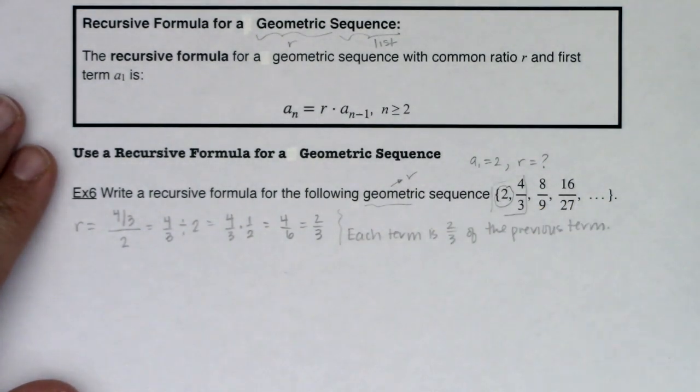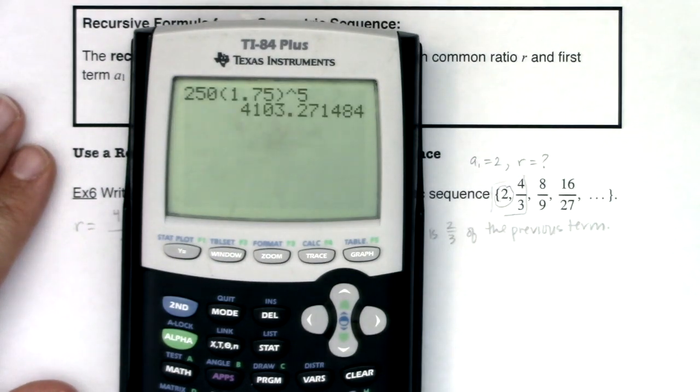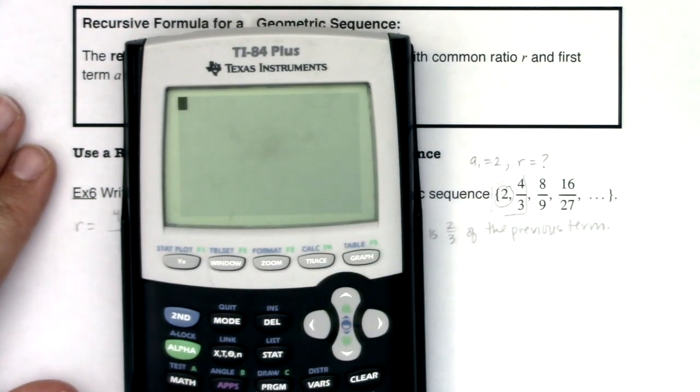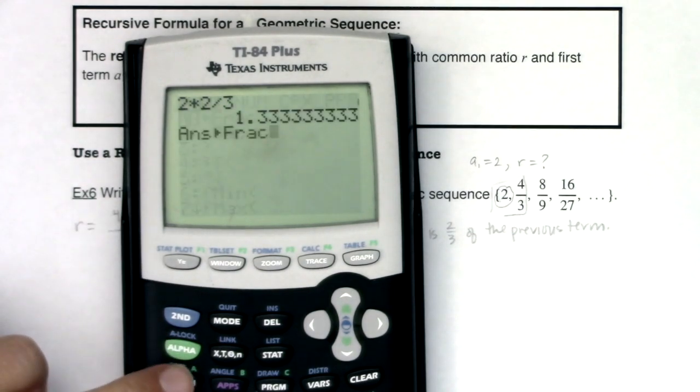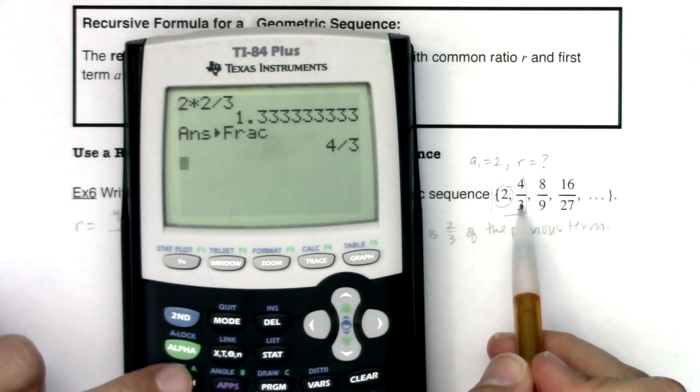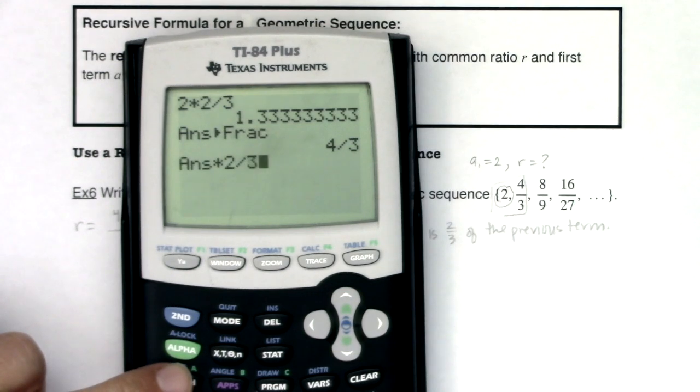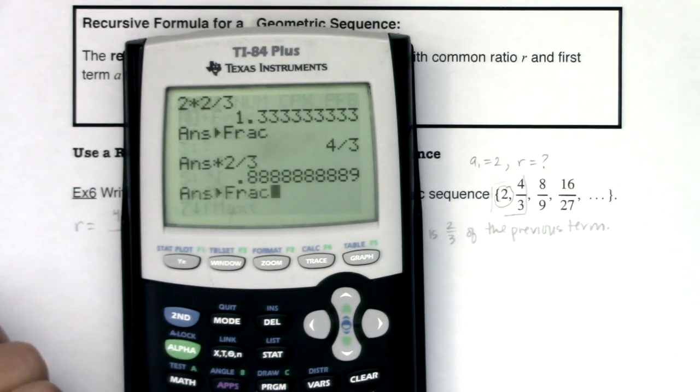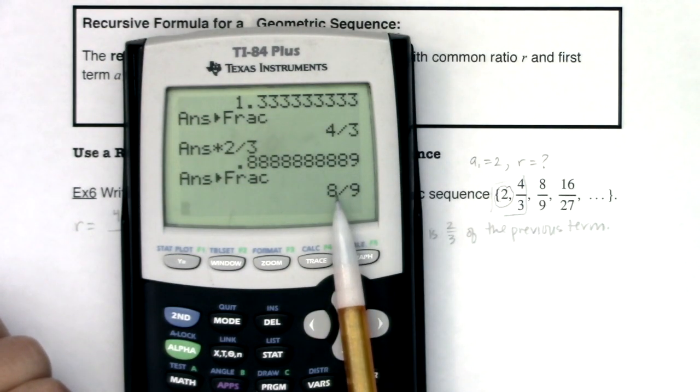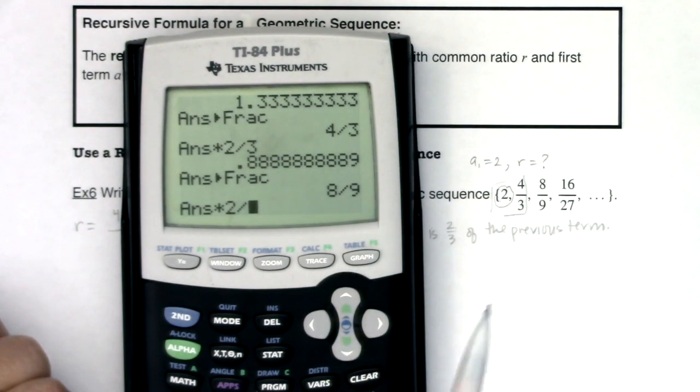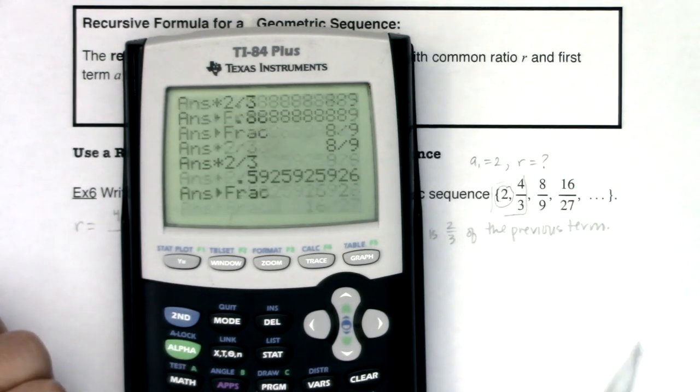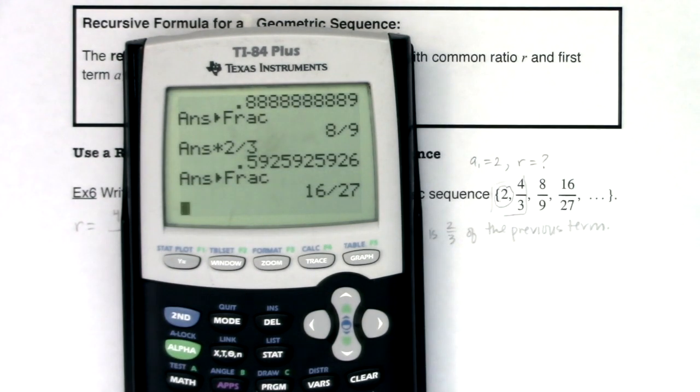And I just want to work this, let's just check because I know it seems kind of funky, especially with fractions. If I take 2 and I multiply it by 2 thirds, sure enough I get the fraction 4 thirds. Well, let's take 4 thirds and multiply it by 2 thirds, multiply it by that R value. What fraction am I left with? 8 ninths. Okay, let's take 8 ninths, multiply it by R. What fraction do I get? 16 27ths. So this R, this common ratio, it is working through all of this.